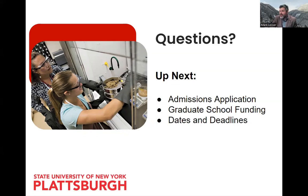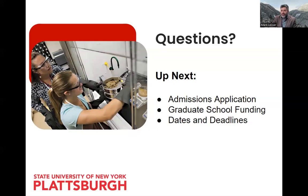If you took a class such as wetlands as an undergrad at Plattsburgh, you cannot take the cross-listed 400/500 level class again, even at the other level. However, we have more than enough choice in all categories, and we can figure out independent studies if needed. Many students who were our undergrads here find they still have a lot of course options as graduate students.